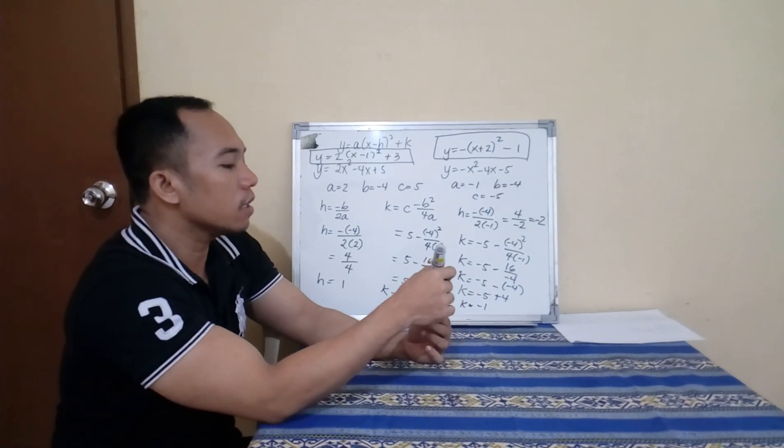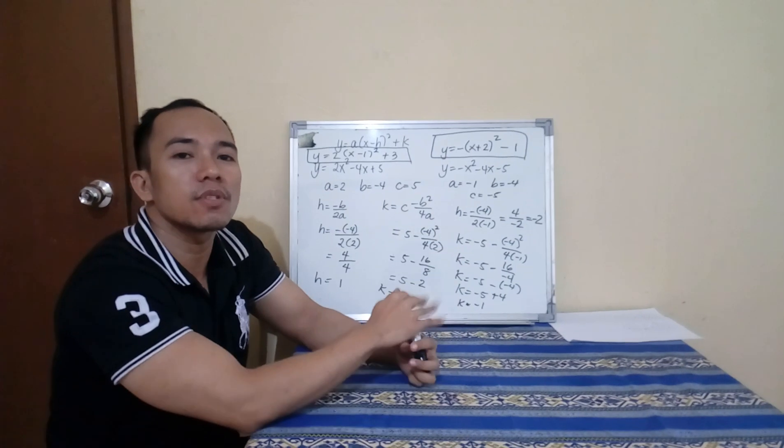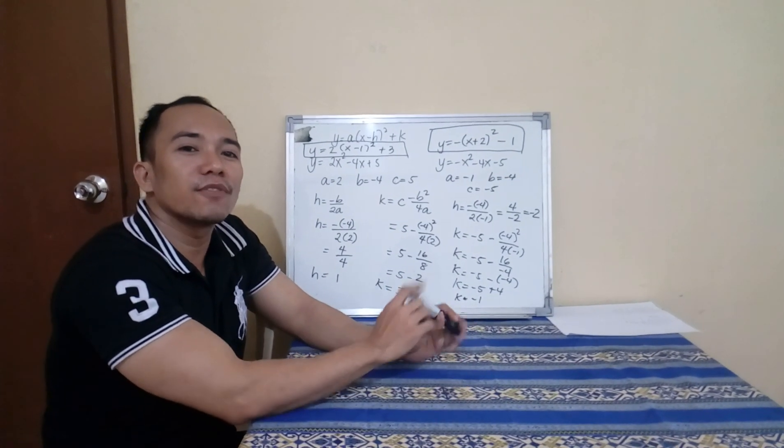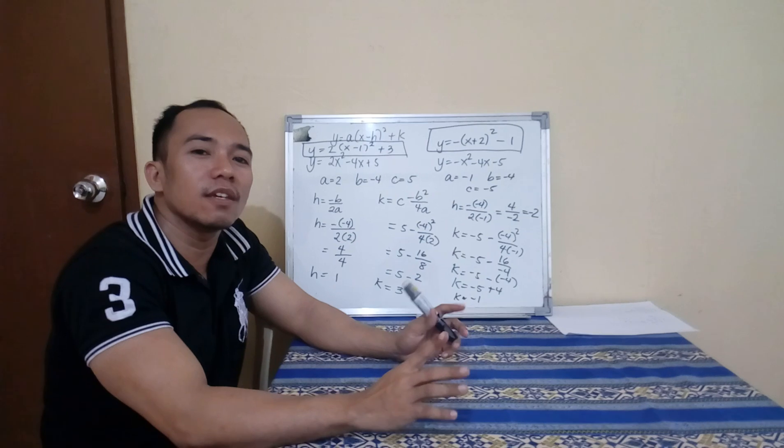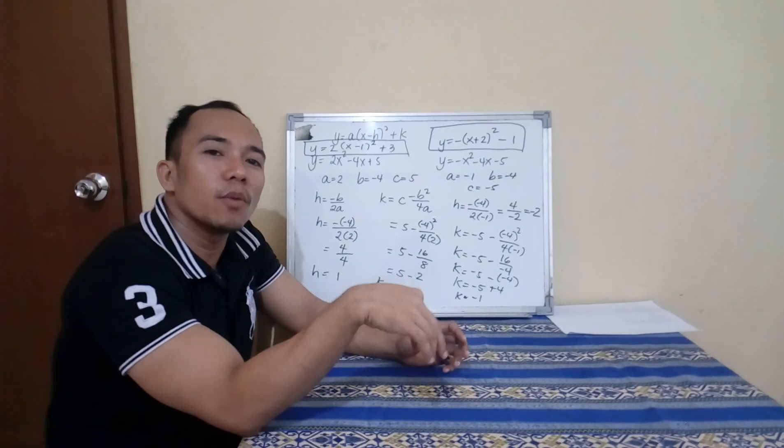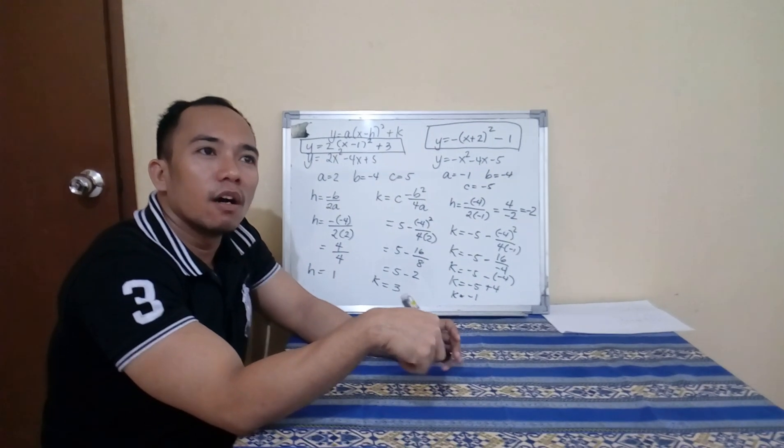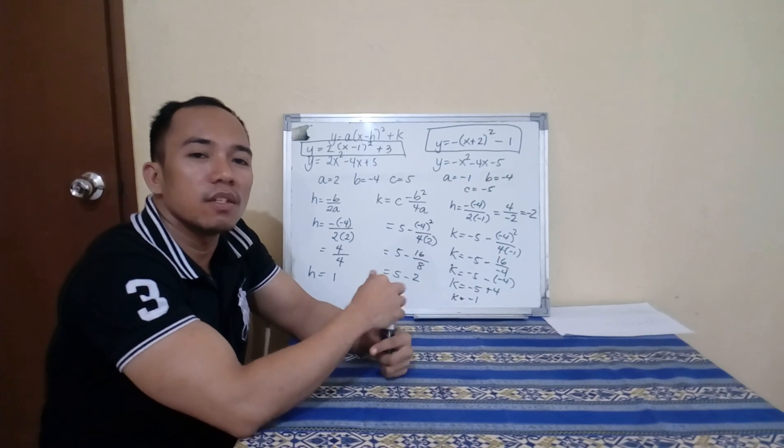We did not use completing the square. Instead, we just used the formula for H and K. That's all. Don't forget to subscribe and watch the video, and put the comments below on what you learned from this video. Thank you.